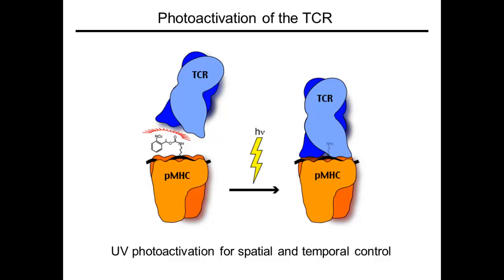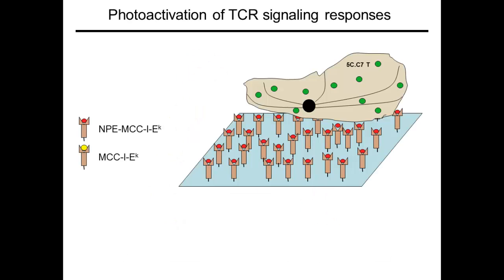This enables us to switch on TCR signaling with a localized UV pulse. To study T-cell polarity, we take T-cells and attach them to glass coverslips containing photoactivatable peptide MHC. The T-cells contain some sort of fluorescent signaling probe, typically a molecule linked to GFP or RFP. They do not become activated, however, because the peptide MHC is photocaged.